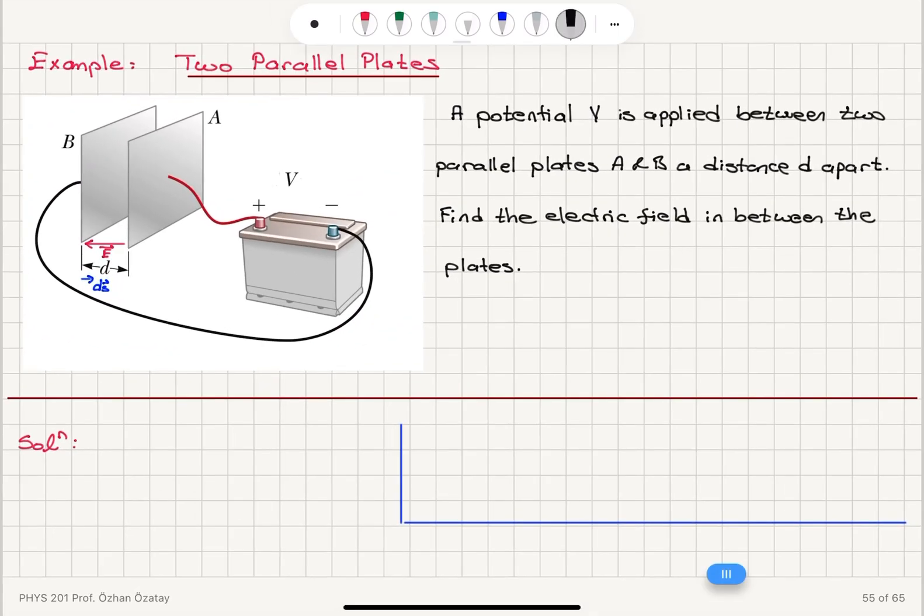Now, if I calculate the potential difference, delta V going from plate B towards plate A, that is VA minus VB.